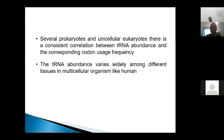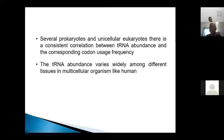Prokaryotes and eukaryotes have different tRNA dependencies depending on their codon usage sequences. In multicellular organisms like human beings, different tissues have different kinds of tRNA abundance, because different tissues synthesize different kinds of proteins requiring different codons. So tRNA abundance varies between tissues, and there is also variation in codon usage between prokaryotes and eukaryotes.